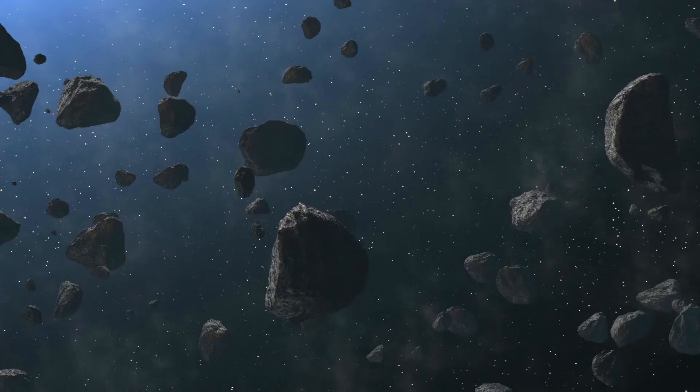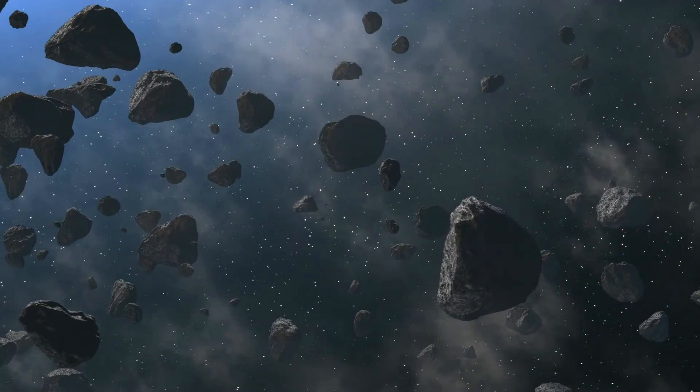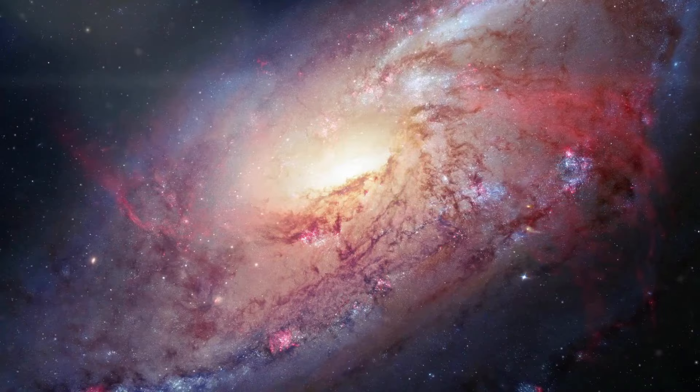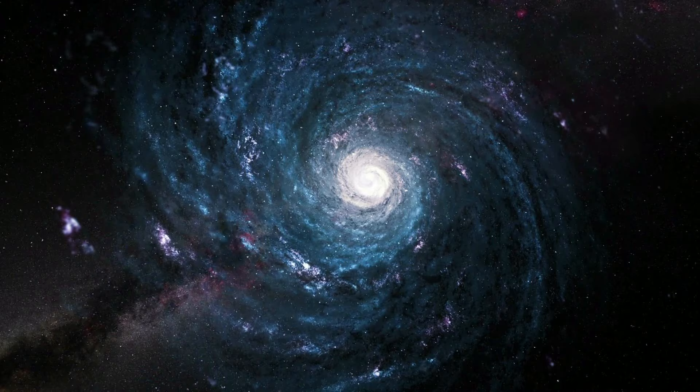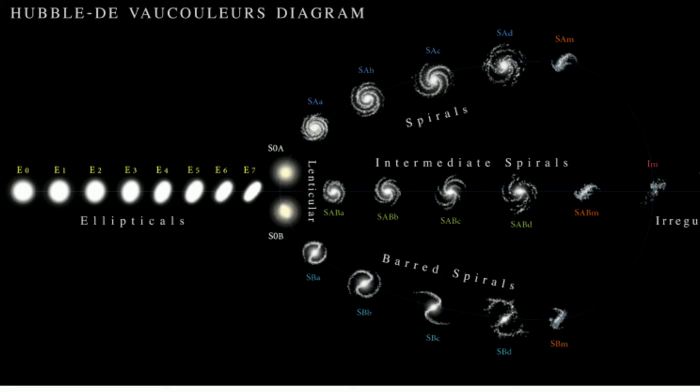A galaxy is larger than a solar system, and it is a gravitationally-bound collection of stars along with their planets, gas, dust, and dark matter. There are at least three main types of galaxies: elliptical, spiral, and irregular.